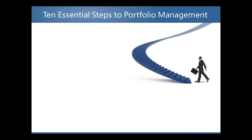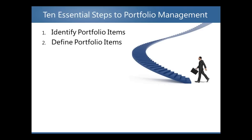Step one: identify portfolio items. Determine what project or work you would like to implement. This is not an individual effort — most likely work and projects will be identified by many in the organization. Step two: define portfolio items. For this pre-selection round, you'll need to define enough information to establish value of the given initiative, but not too much detail. Description, business case, benefits, strategic alignment, and risk tolerance are all factors to be considered.